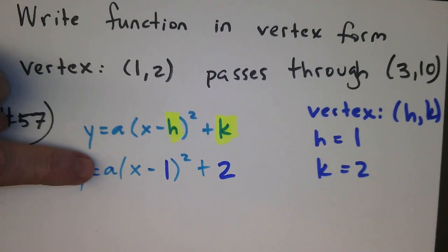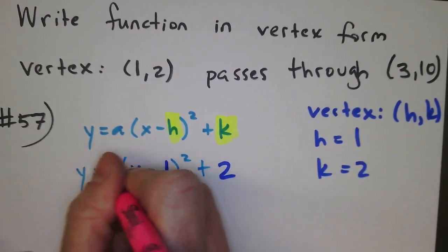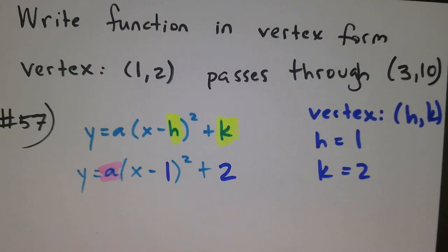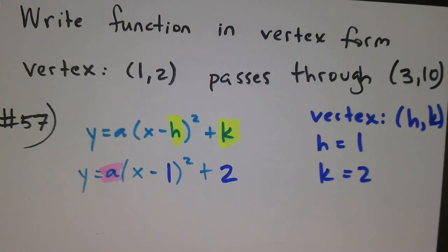And then I need to know what the a value is. Now this one's a little bit trickier, right, because we've got to figure out what this number is. So I'm going to use the other point. They gave us that point for a reason, and the reason is we're going to use it to figure out a.